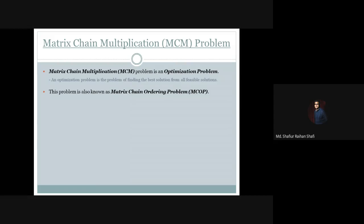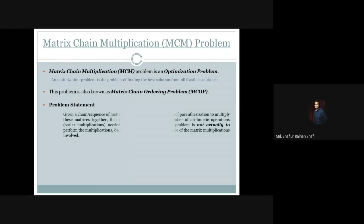The problem is also known as the Matrix Chain Ordering Problem, abbreviated as MCOP. So the MCM problem can also be called the MCOP problem. The problem statement is: given a chain or a sequence of matrices, find the most efficient way of parenthesization to multiply these matrices together.